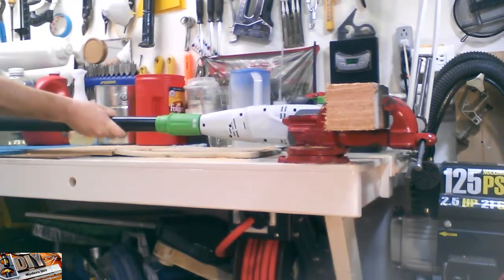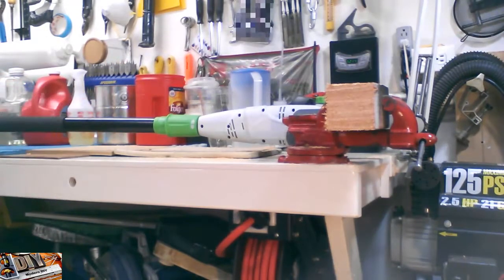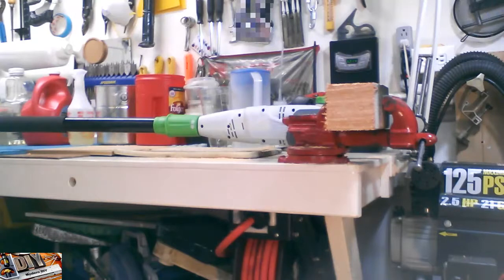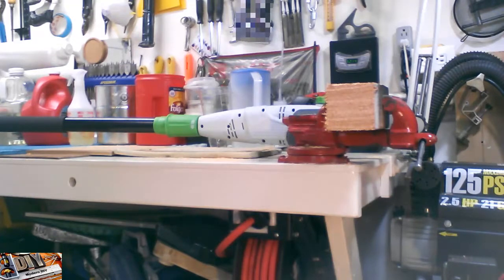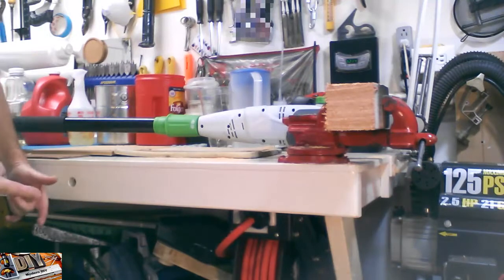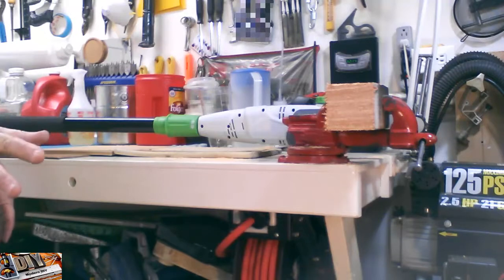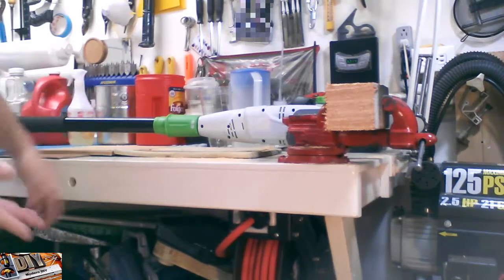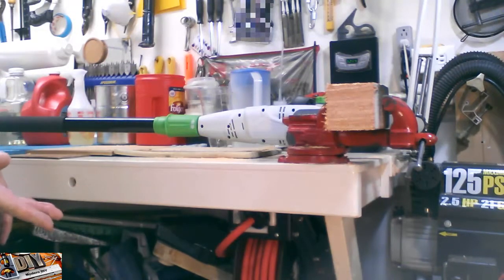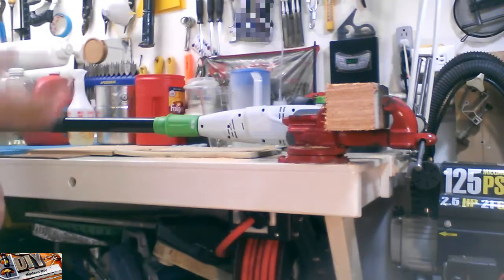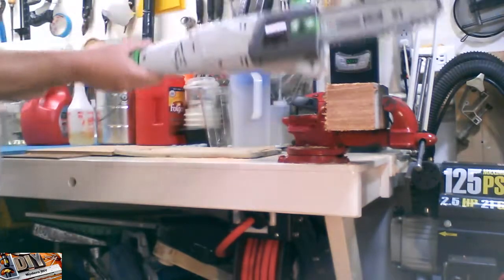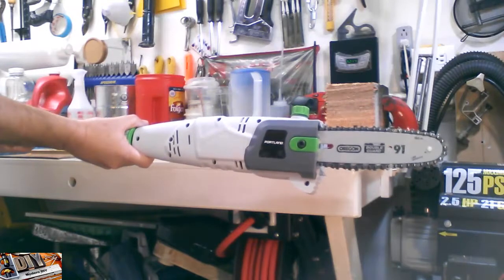So there you have it folks. I think the Harbor Freight pole saw is really a pretty good saw. It cuts through wood very easily. And it gives you the reach for places that are far up above your head. And you either can't reach or don't want to get up on a ladder to reach. So standing on the ground, you can reach up to almost nine feet high. Cut off those branches. And if you choose to, you can always get on a ladder and give yourself a higher reach. So there you have it. I think the Harbor Freight pole saw is a pretty good buy.